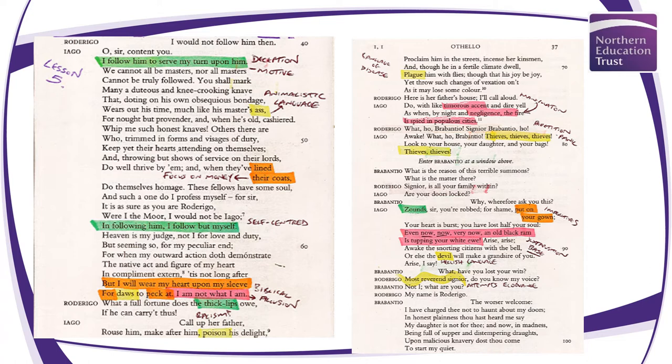'Heaven is my judge, not I for love and duty, but seeming so for my peculiar end. For when my outward action doth demonstrate the native act and figure of my heart in compliment extern, 'tis not long after but I will wear my heart upon my sleeve for daws to peck at.' A key quotation — again we've got animalistic language. 'I will wear my heart upon my sleeve' is a famous phrase, but with the enjambment 'for daws to peck at,' he's suggesting he'll seem open on the outside while his inner motives are very evil.